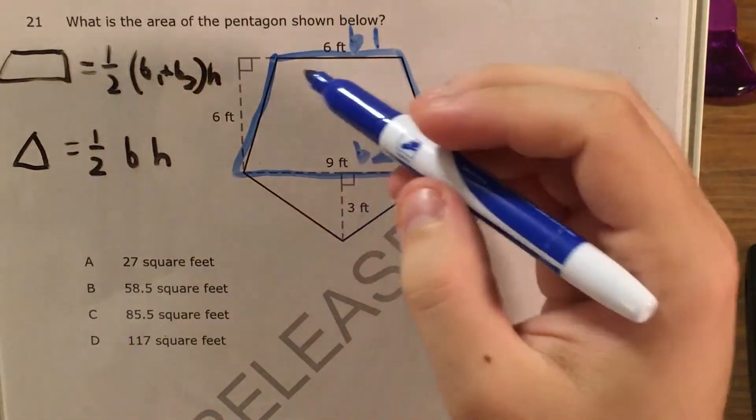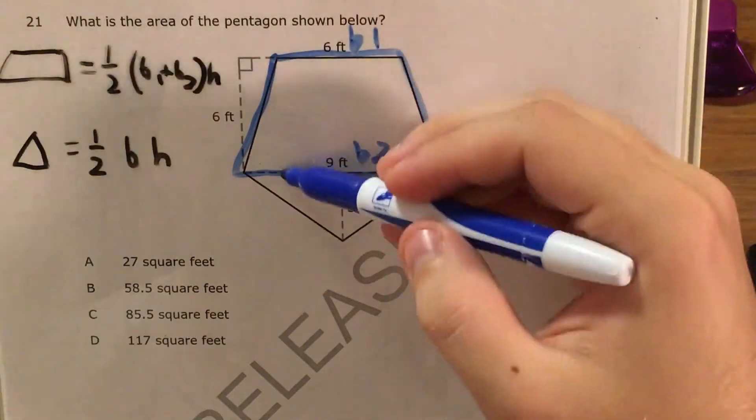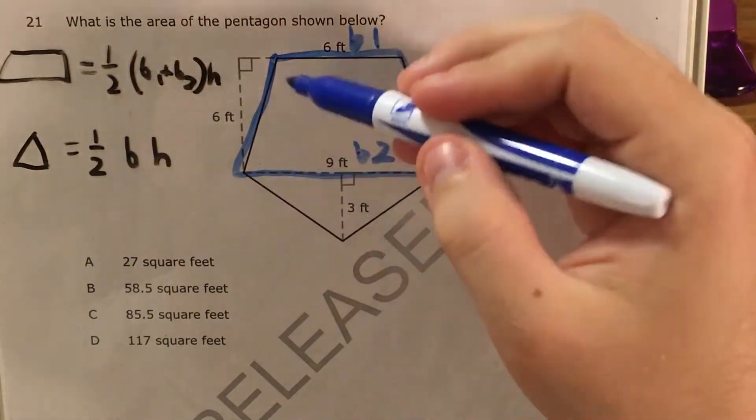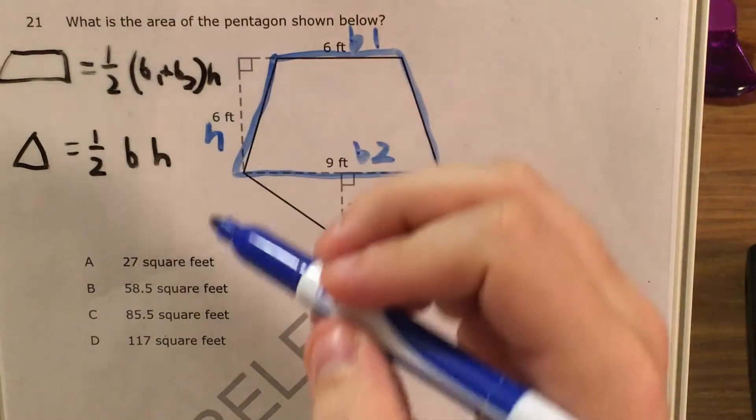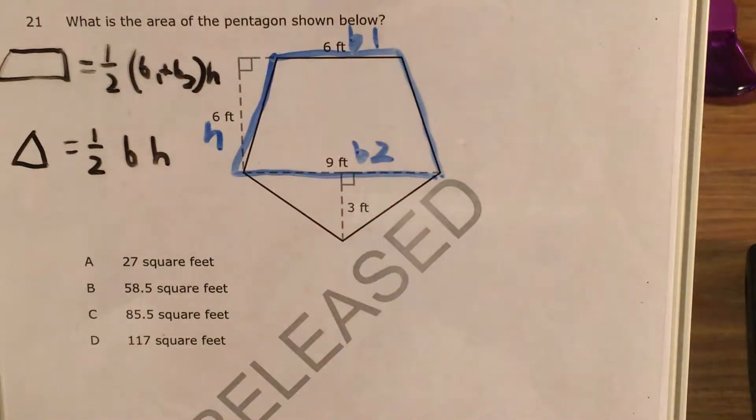And then my height isn't one of these slanted sides, it's actually this vertical distance here from one of my bases to the other one, and the problem tells us that that is actually six feet. So it gives us a nice bit of information, and now all I have to do is plug in those numbers into this formula.